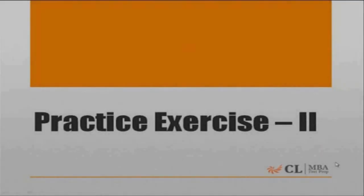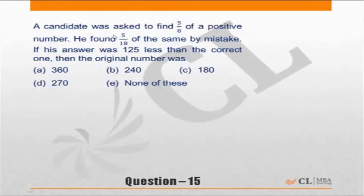Okay, let's do practice exercise 2, question 15. A candidate was asked to find 5/8 of a positive number. He found 5/18 of the same by mistake. If his answer was 125 less than the correct one, then the original number was.